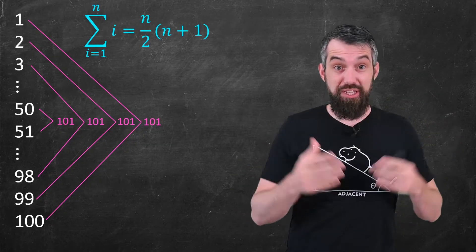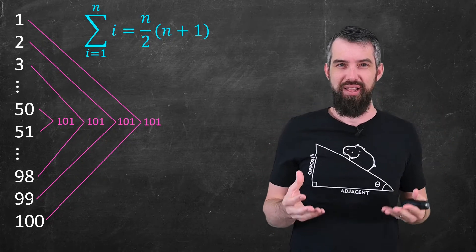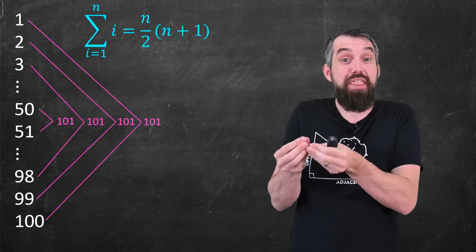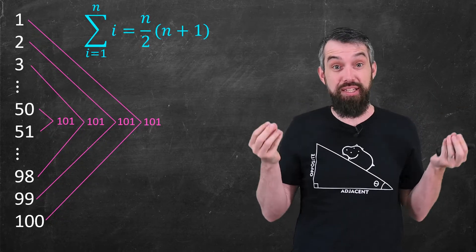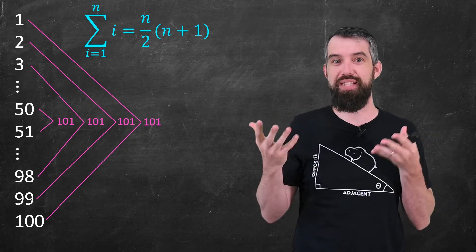And then we can use summation notation to get this nice general result, where the sum of the first n numbers, well, you take pairs of numbers and add them up to be n plus 1. And since it takes two things to make one pair, there's n divided by two copies of this n plus 1.